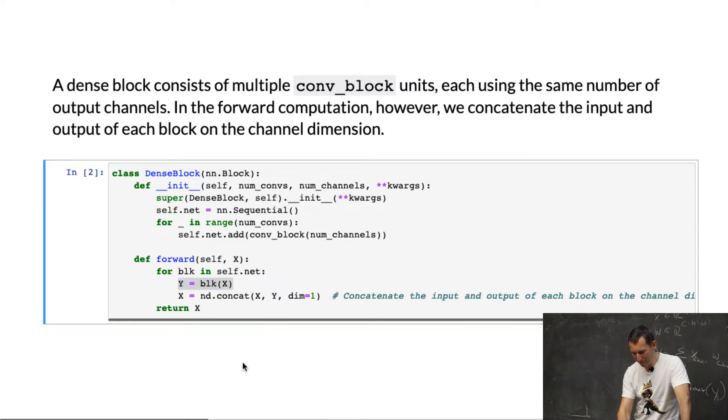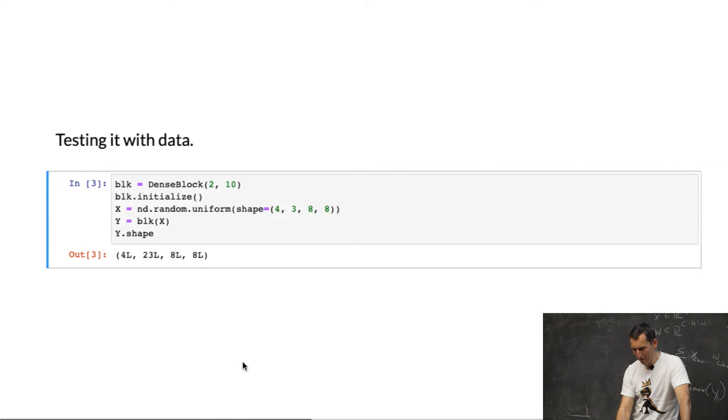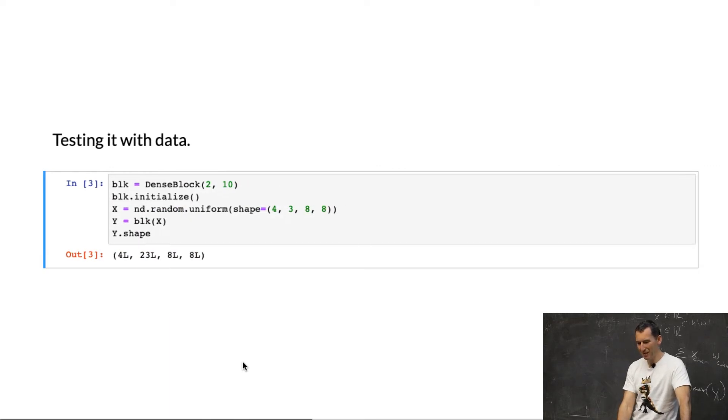If we were to test this with data, we'd get that if I have this dense block with 10 features and two input iterations, I pick three channels as input. Then, I add two times 10 channels to it. As a result, I'll get 23 channels. That's pretty straightforward from the construction.